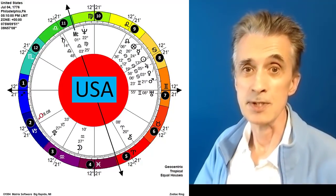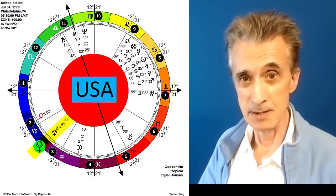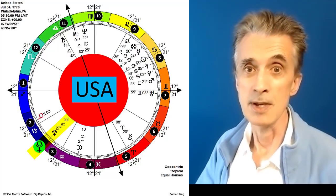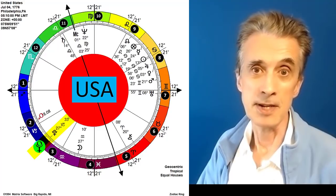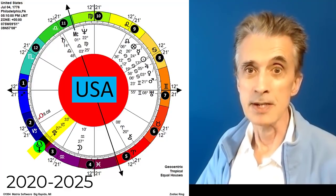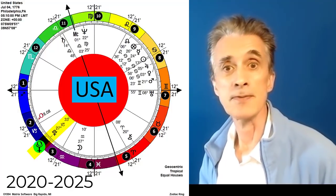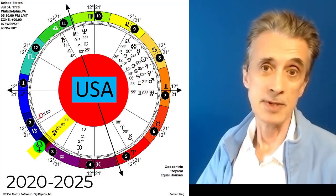In regard to the Pluto return for the U.S., which in some sense is happening this year by exact degree, but as I said in the previous video, it really spans a period of time starting in 2020-2021 and going all the way to 2024-2025 by taking into account exact degrees, precession, etc.